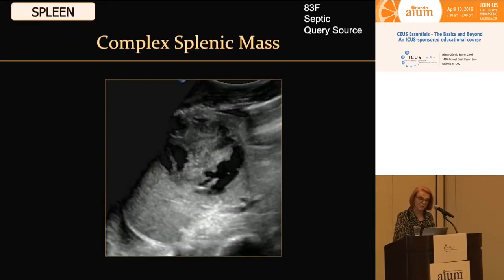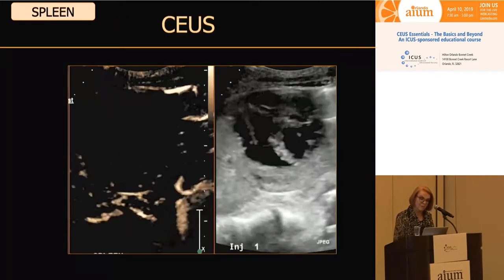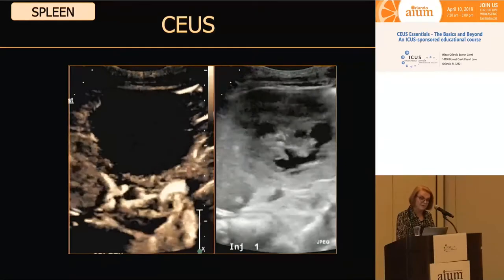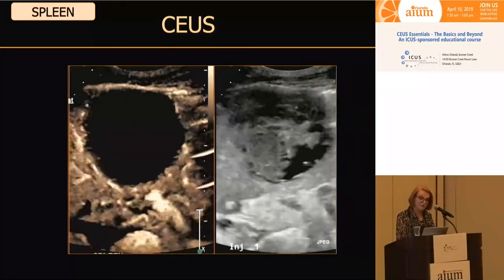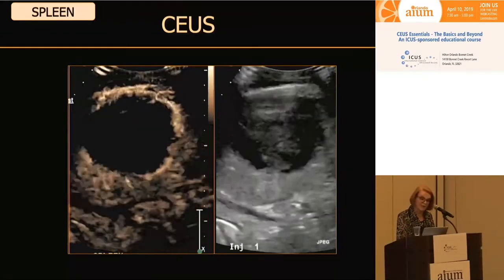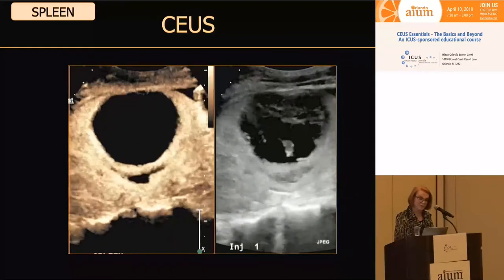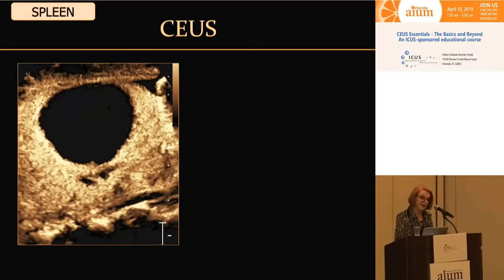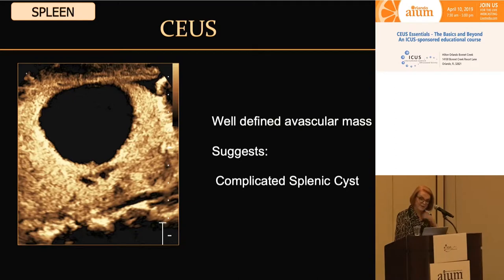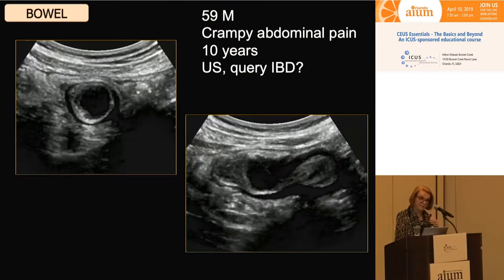Here's an 83-year-old female — still looking at the spleen. She's septic, and they're looking for a source of sepsis. She has a somewhat bulbous spleen and a large complex mass in her spleen. Could that be a source of sepsis? Certainly it could be. But on our contrast examination, the mass is very well-marginated, with no enhancement within any of the solid components and no evidence of hyper-enhancement of the surrounding splenic tissue. This would likely be some kind of complex cystic lesion and probably not playing a role in her sepsis. A well-defined avascular mass suggests a complicated splenic cyst.